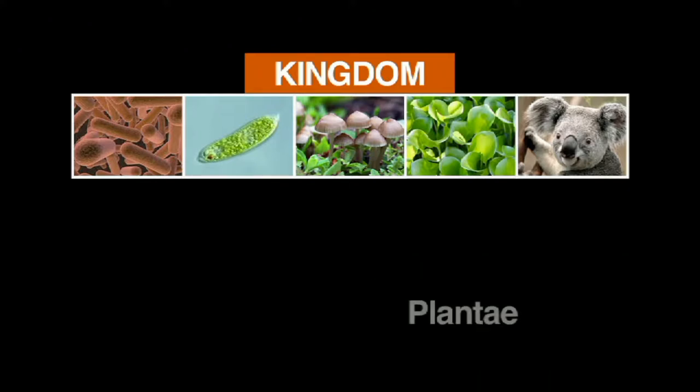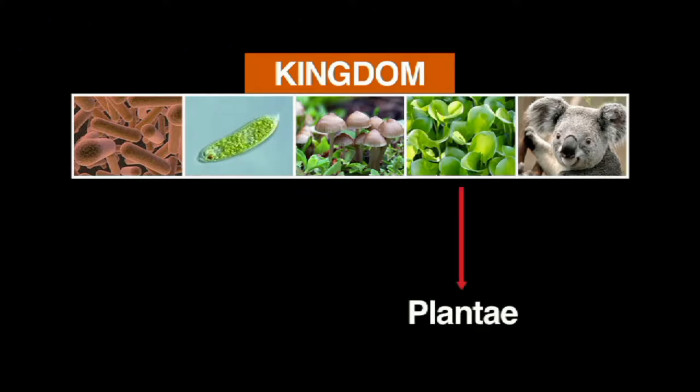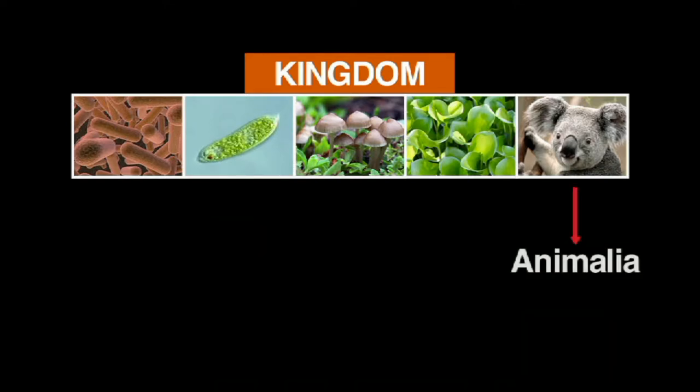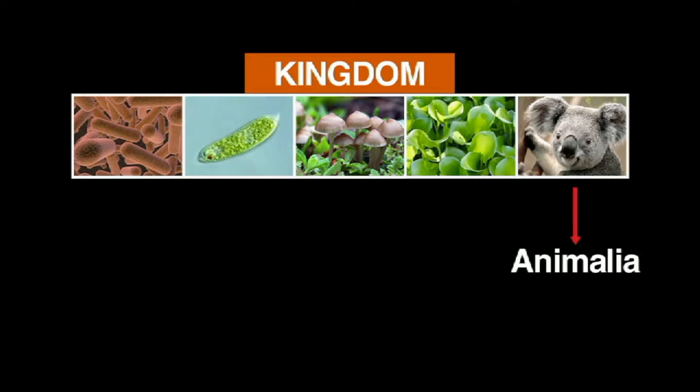Kingdom Plantae includes grasses, flowers, and trees. And Kingdom Animalia includes all the animals found on Earth.